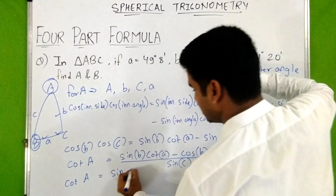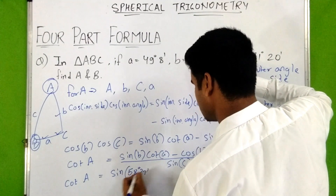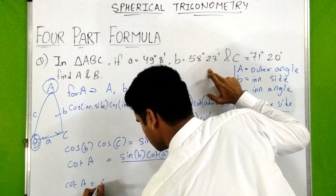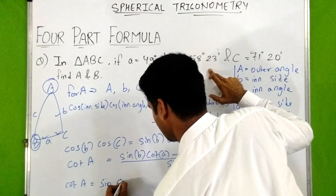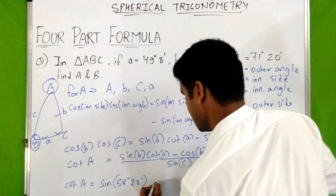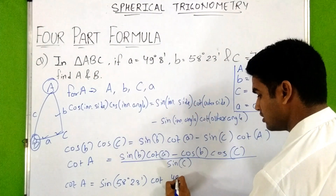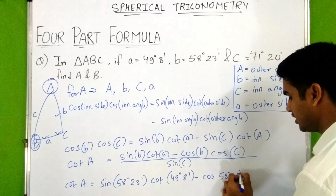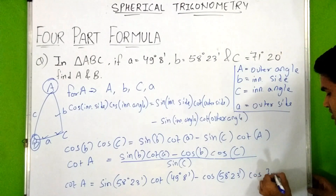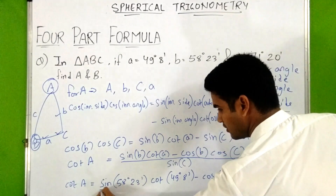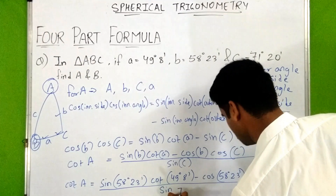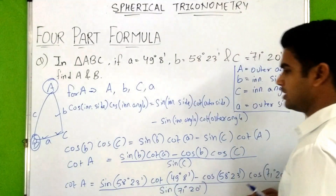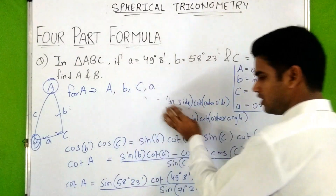Substituting the values: cot(A) = [sin(58°23') × cot(49°8') − cos(58°23') × cos(71°20')] / sin(71°20'). Now entering this whole expression into a calculator gives the value of cot(A).